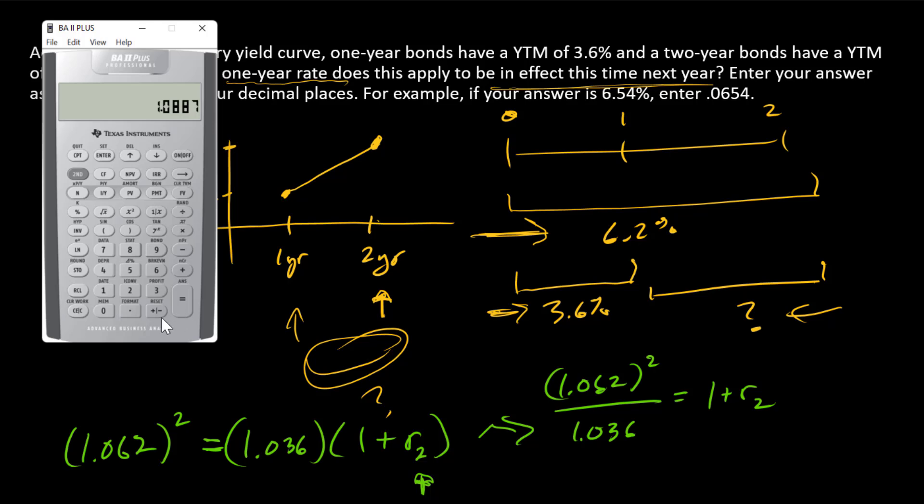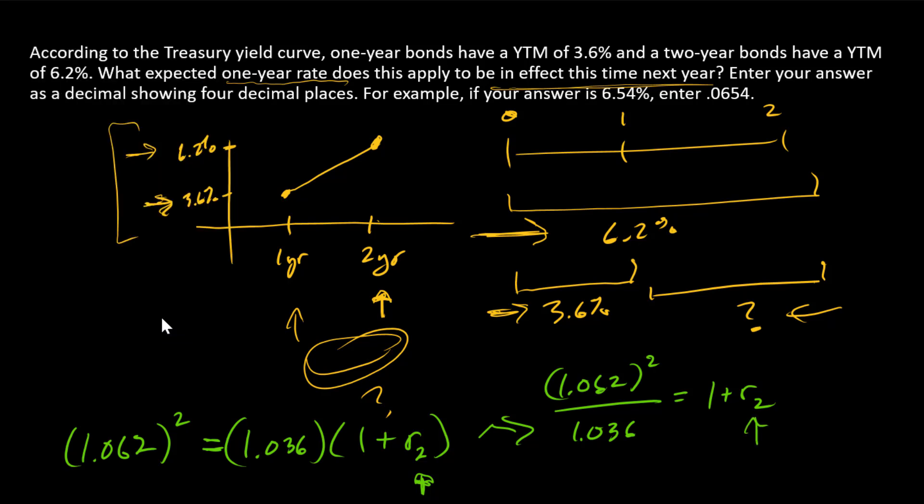And there we have that number. What is R2? It's 8.87%.